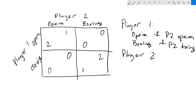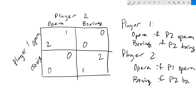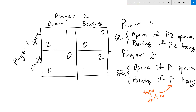The situation is exactly the same for player two, where player two is always going to want to go wherever player one is going. So we have opera if player one picks opera, and we have boxing if player two picks boxing. Just like with the prisoner's dilemma, we have built up a best response strategy for both players. In the prisoner's dilemma, it did not matter what the other person was doing — the best choice was still always to think. Here things are a little bit more nuanced where it actually does matter what the other person is doing. You're always going to want to pick the same thing as the other player.